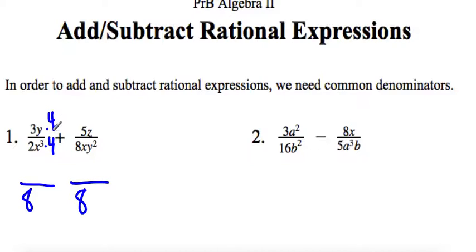Now we'll move on to the x's. The first fraction has an x cubed, the second fraction only has an x. So we need to go with the bigger one. We need x cubed on both of these, which means this fraction needs two more x's. So we're going to multiply top and bottom by x squared.